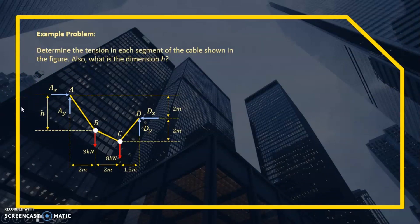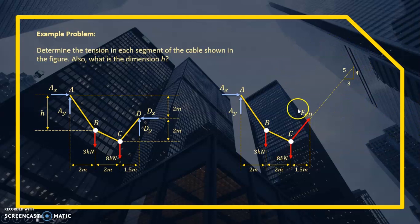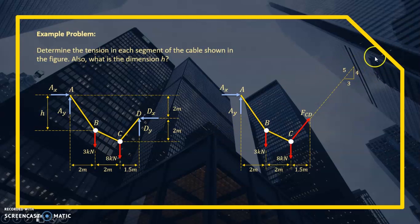First step: draw the free body diagram. The reactions at pin A are Ax and Ay, and at pin D are Dy and Dx — these are all assumptions. We can't use the three equations of equilibrium directly, so we'll apply the method of sections by cutting at member CD. Considering the left portion of the cut, we can identify the slope of force FCD as a 3-4-5 triangle: 3 horizontal, 4 vertical, 5 hypotenuse.